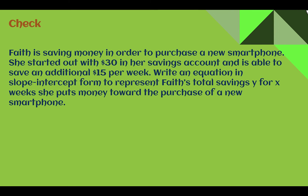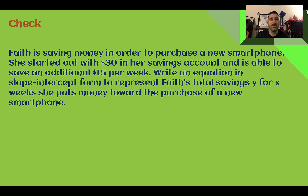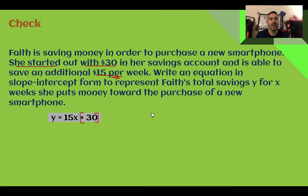Check your understanding: read through the situation and write an equation for it in slope-intercept form. The equation you should have got is y equals 15x plus 30. She started out with $30, and she's adding $15 per week. So $15 each week is the rate of change, and she started with 30 as the y-intercept. So each week a change of 15, started at 30: y equals 15x plus 30.